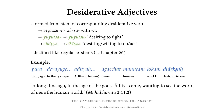From cikīrṣa, which is the desiderative verbal stem of kṛ (to do) — so cikīrṣati means he wants to do — we get the desiderative adjective stem cikīrṣu, meaning desiring or willing to do or to act. Desiderative adjectives are declined like regular short u stems, which were introduced in Chapter 26.